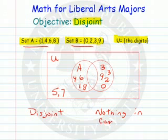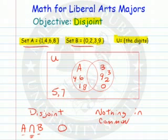The reason they are disjoint is that they have nothing in common — nothing in common between the two sets. Or you may think of it this way: the intersection of A and B is the null set. There are no elements in the intersection of A and B, therefore A and B are said to be disjoint sets. Hope this helps you understand disjoint sets. As always, have a very happy day.